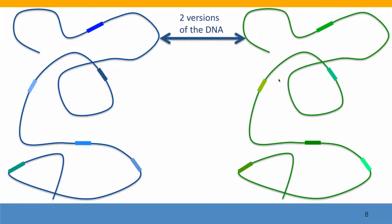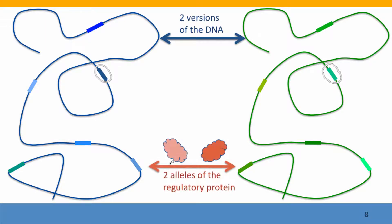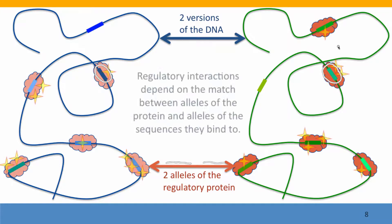The situation is even more complicated if we're thinking about two different versions of the DNA in different individuals, where each of these regulatory binding sites may itself exist in different alleles. So this would be one allele at this position, and this would be a different allele of the DNA sequence that the regulatory protein binds to. If we have two different alleles of the regulatory protein — the gene encoding the protein comes in different versions — and the DNA sequences it binds to come in different versions around the chromosome and in different homologous versions at homologous sites, then there are many, many different ways the proteins can affect gene expression, depending on the match between the alleles of the binding protein and the alleles of the sequences they bind to.